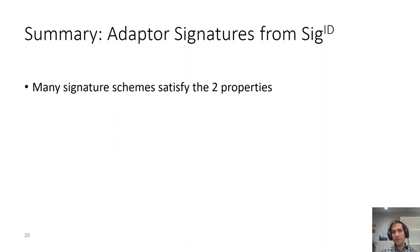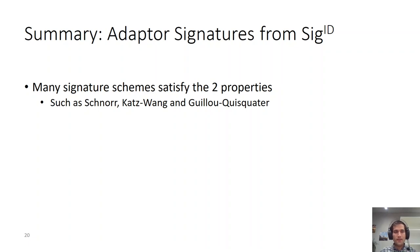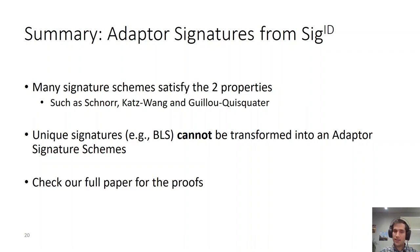First, I would like to point out that many signature schemes satisfy these two properties — not only Schnorr, but for example also Camenisch-Stadler and Guillou-Quisquater. So it was not a coincidence that Schnorr could be turned into adapter signatures; these other two schemes can also be transformed into adapter signatures. Second, unique signatures such as BLS cannot be transformed into adapter signatures, because there is no randomness to play with in order to transform them. We actually proved this in our paper, and if you're interested in the proofs, please take a look at our full paper.